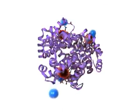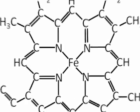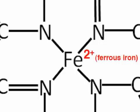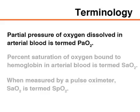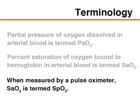Carboxyhemoglobin is hemoglobin bound to carbon monoxide. Methemoglobin is hemoglobin that contains ferric iron, Fe3+, an oxidized form of the oxygen-carrying ferrous iron, Fe2+, which is found in functional hemoglobin. The partial pressure of oxygen dissolved in arterial blood is termed PaO2. The percent saturation of oxygen bound to hemoglobin in arterial blood is termed SaO2. When measured by a pulse oximeter, SaO2 is termed SpO2.